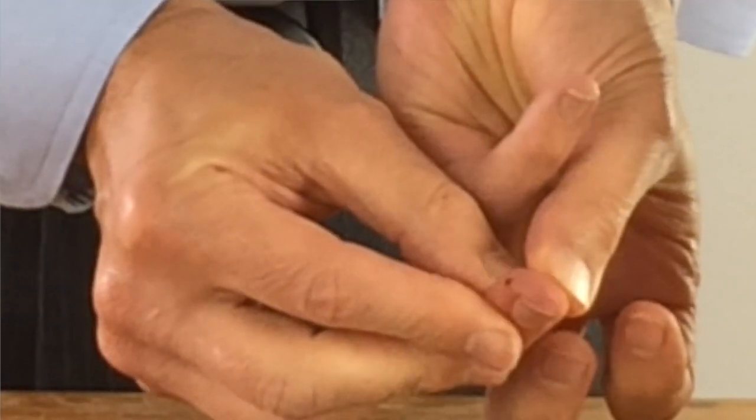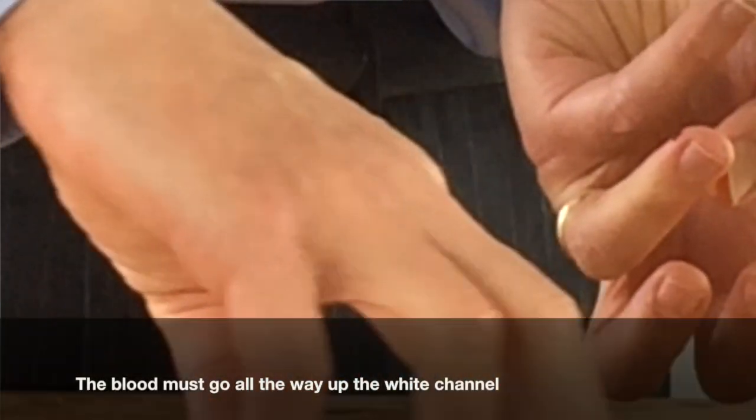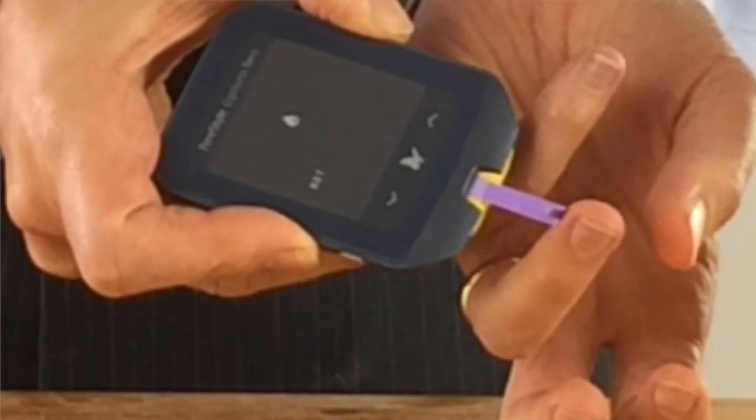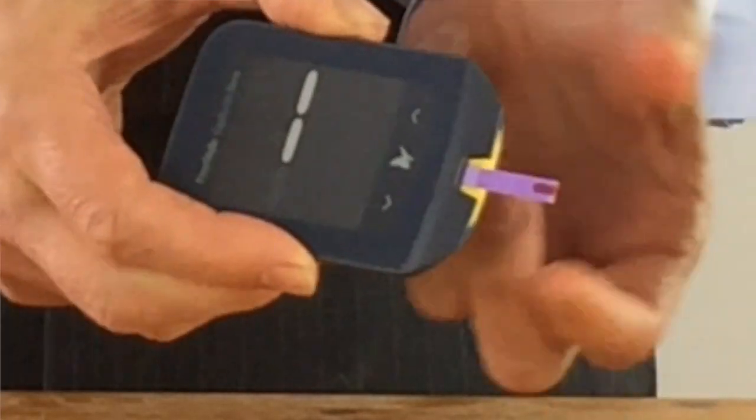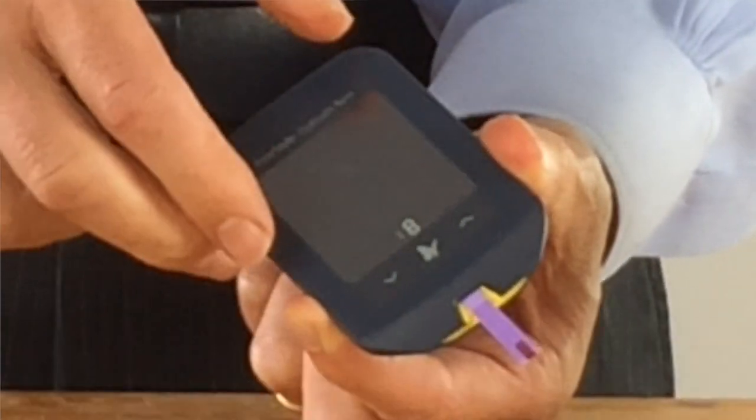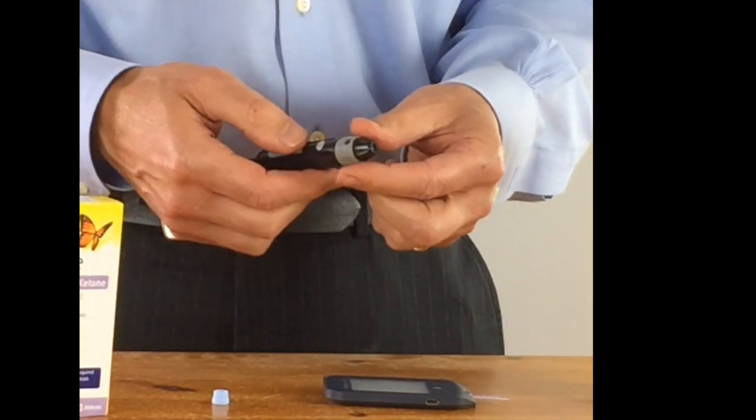You'll get a small well of blood come up. You touch that blood against the white strip of the meter until such time as you see the three lines come up over here. There'll then be a countdown that tells you 10, 9, 8, 7, 6 to get to 1.